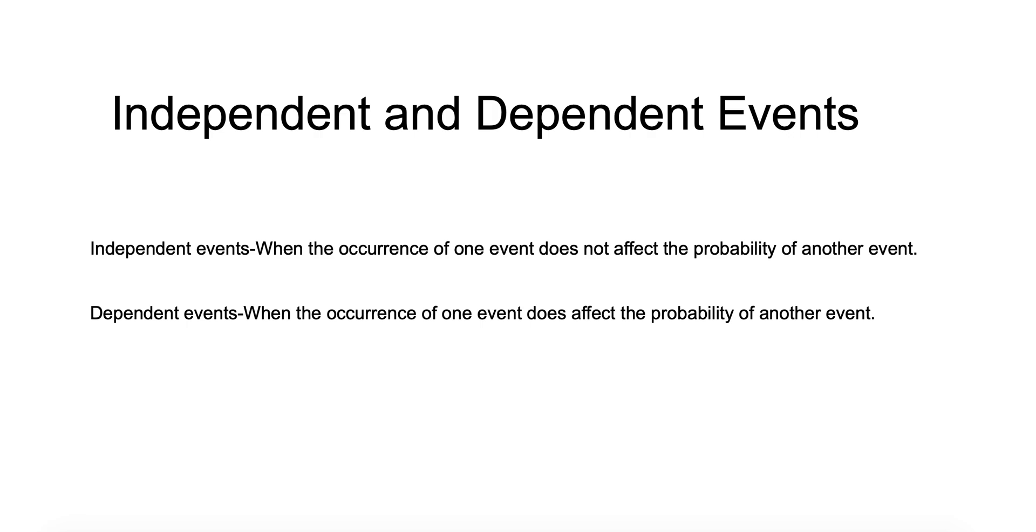So this is dealing with probability. Here we have first an independent event. This is when two things happen and when the occurrence of one event does not affect the probability of the other event.